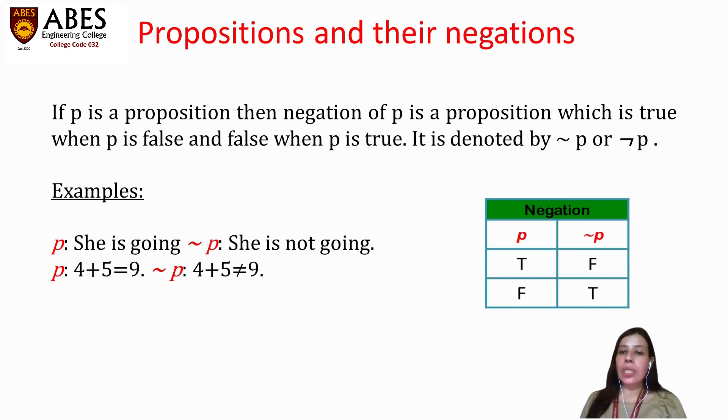As we can see from the truth table, if P holds the value true, then the negation of P will be false, and if P holds the value false, then the negation of P will be true.